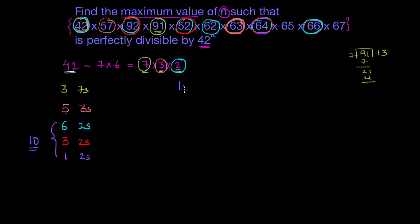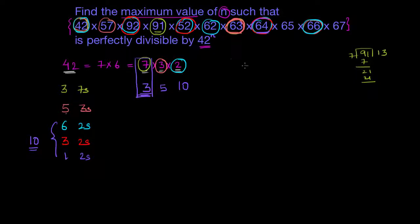So I'll have 10 twos, 5 threes, and 3 sevens. Since the minimum available number is of 7 — it is available only 3 times — I can say that the number of 42s available will be only 3, because I need one 7 in order to form a 42, and since 7 is scarce, I'll just have 3 42s. Therefore, n equals 3.